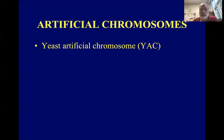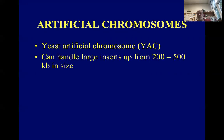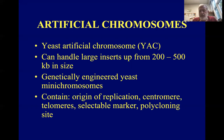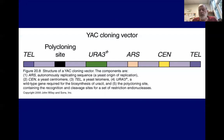YACs are yeast artificial chromosomes. They can handle very large inserts up to 500,000 base pairs in size. These are genetically modified yeast mini-chromosomes — tiny chromosomes that look like dots under the microscope. They contain all the things a cloning vector needs: an origin of replication, a selectable marker, polycloning sites, and being a eukaryotic chromosome, a centromere and telomeres. This shows the YAC cloning vector: TEL are the telomeres, CEN is the centromere, the polycloning site is in black, URA3+ is a selectable marker, and ARS is the origin of autonomous replication.